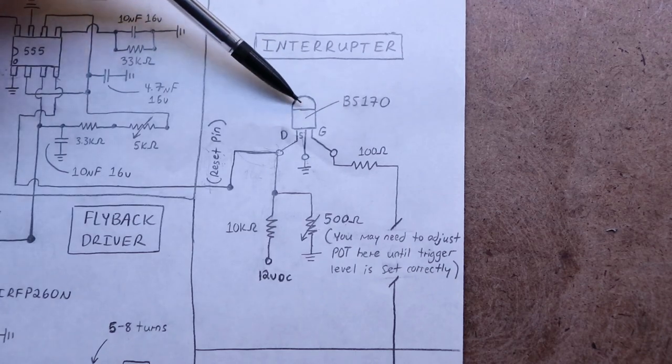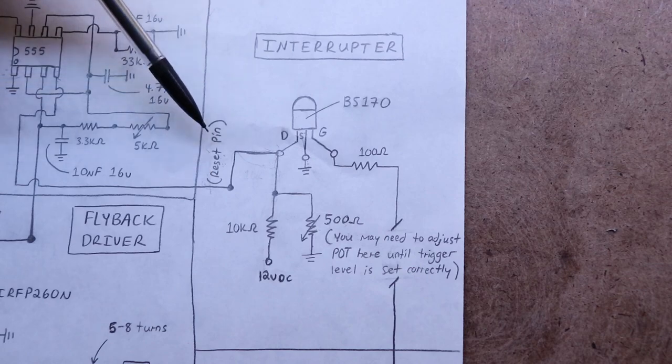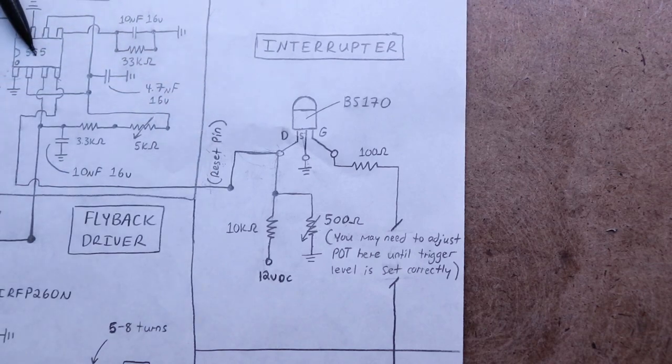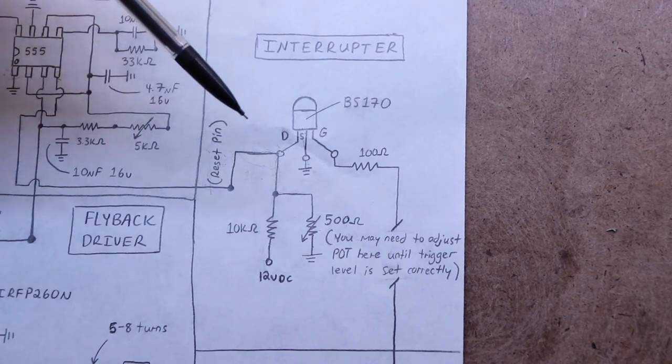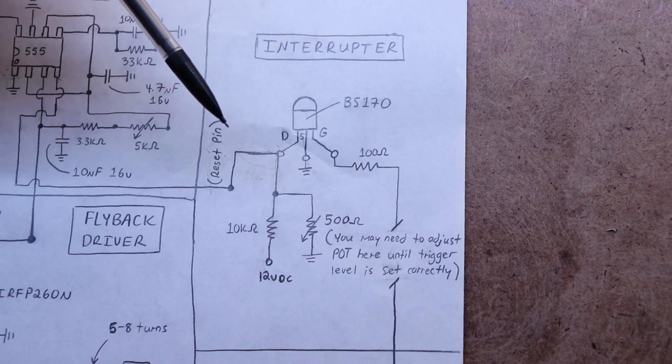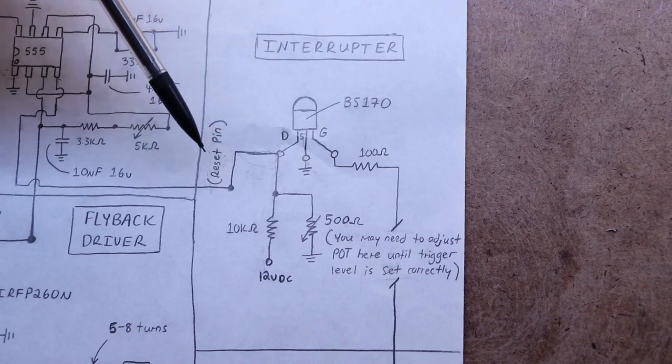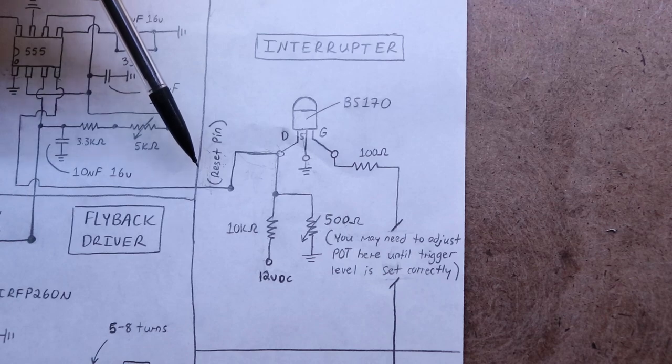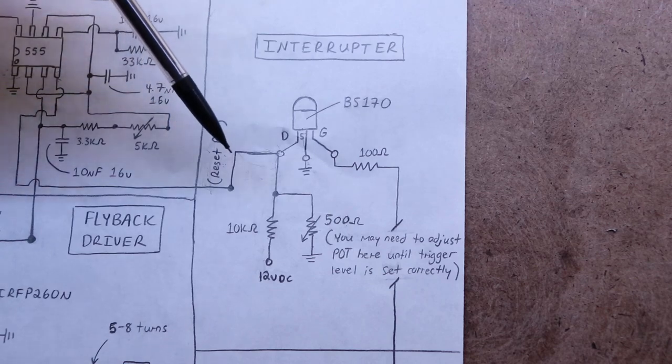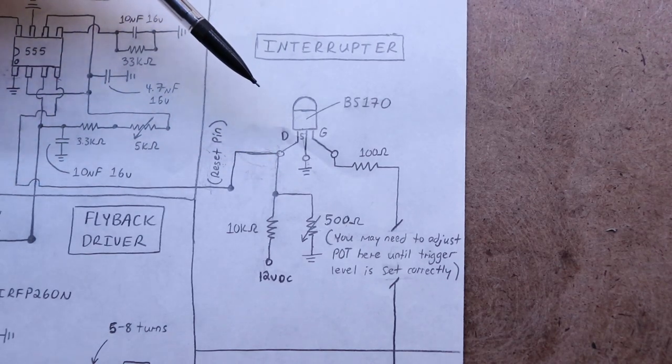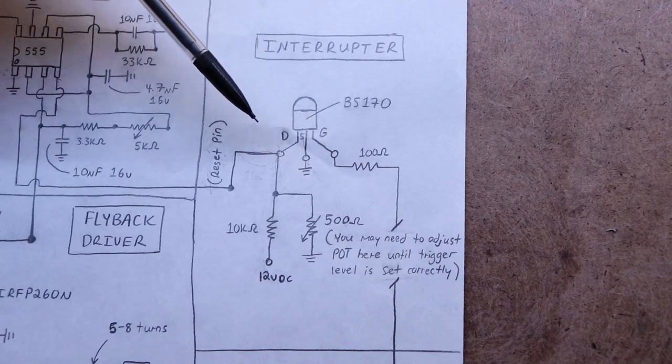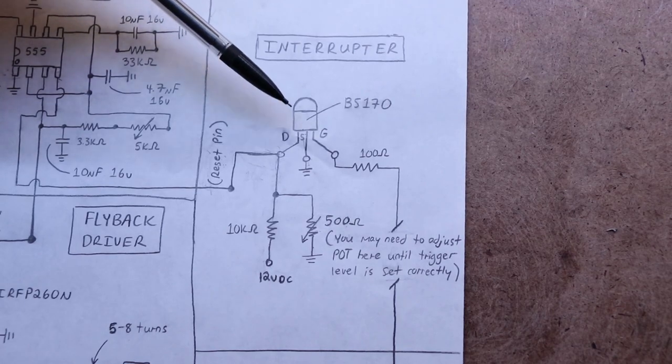Coming here to the interrupter now, we see that this N-channel MOSFET is actually triggering the reset pin on the 555 timer we have. How this reset pin is triggered is really important because this is what is turning the flyback on and off repetitively to make a musical tone. So you have to make sure you do this right. The way I did it, because I couldn't figure out the comparator that was in Franzoli's schematic, is just with a simple N-channel MOSFET.